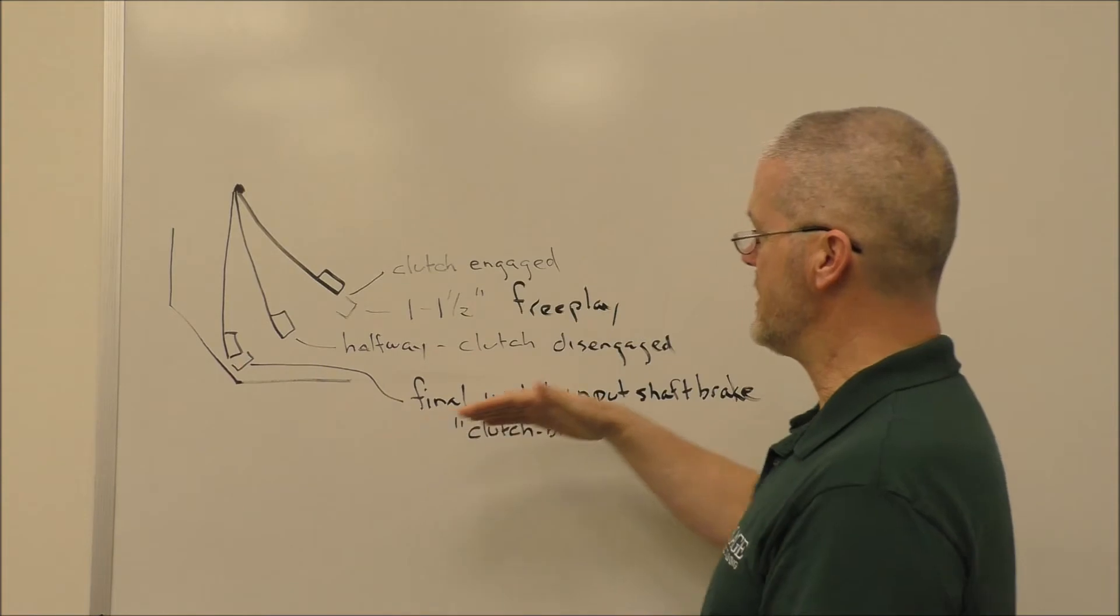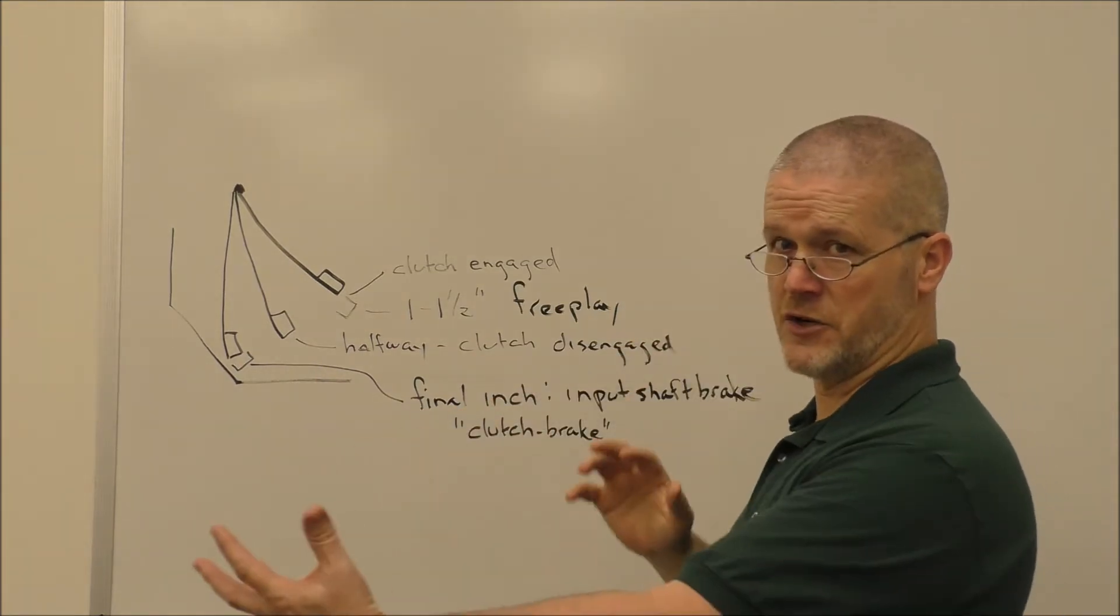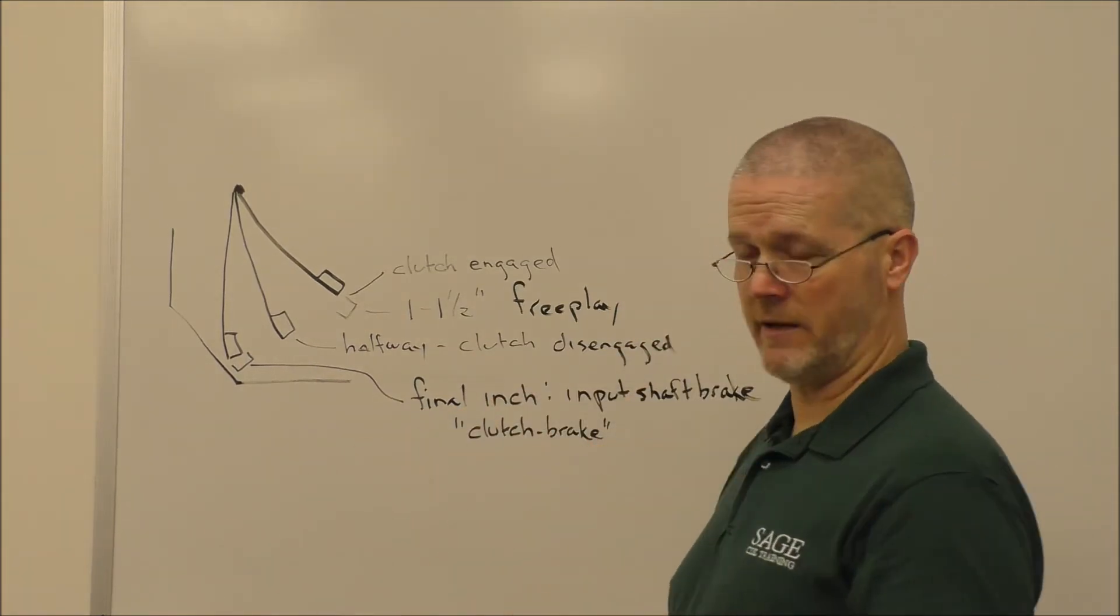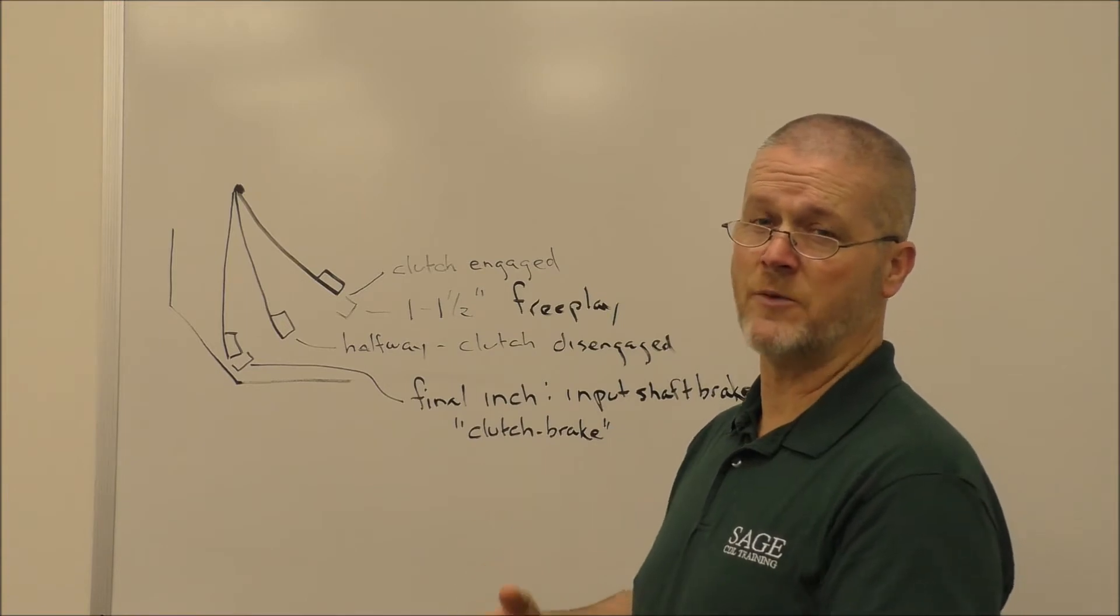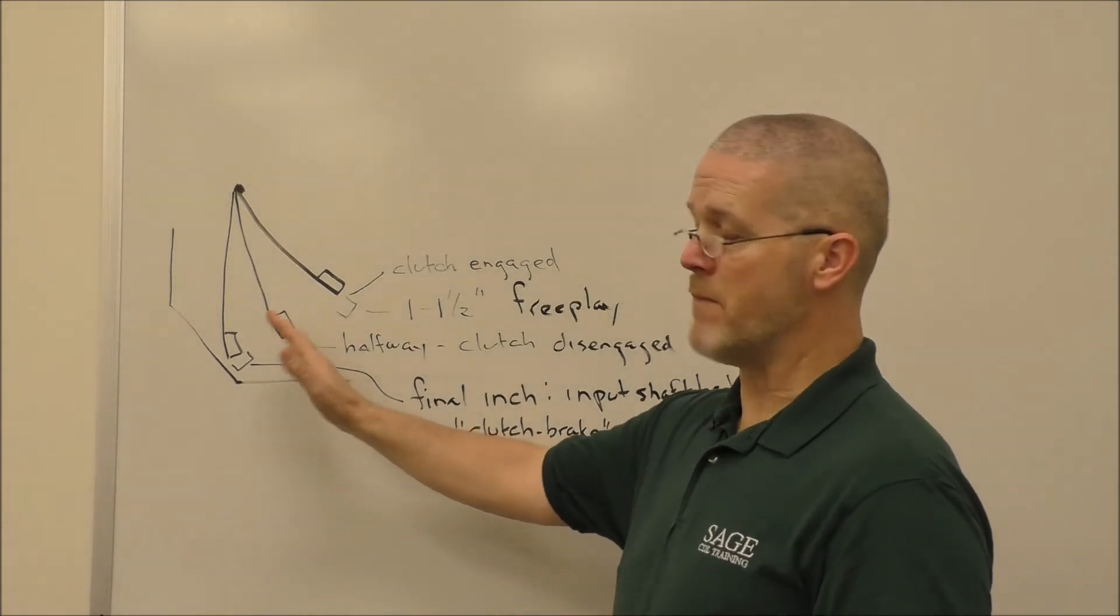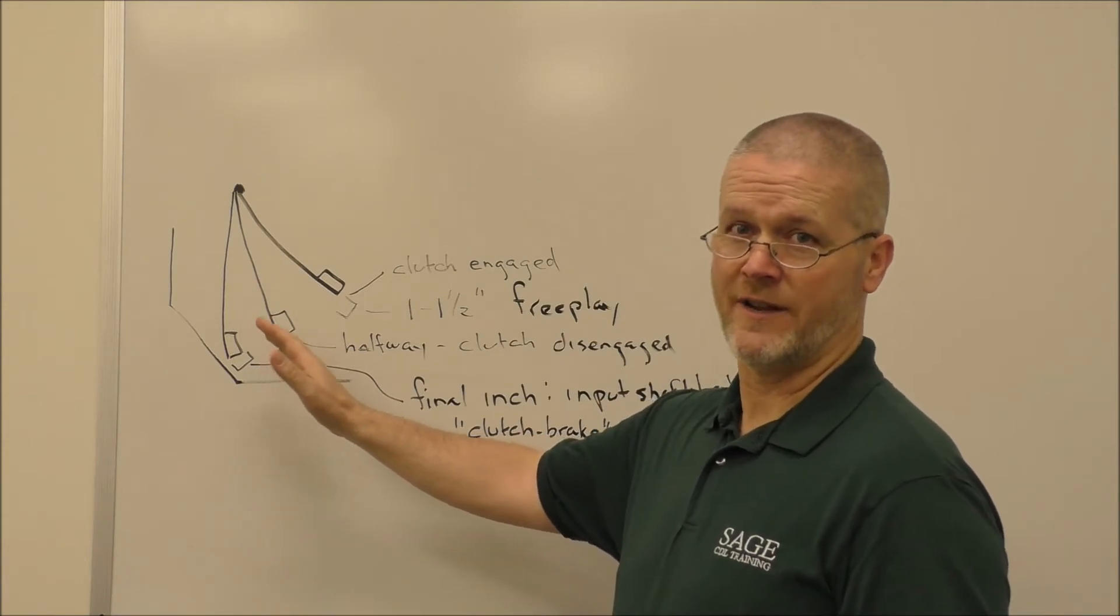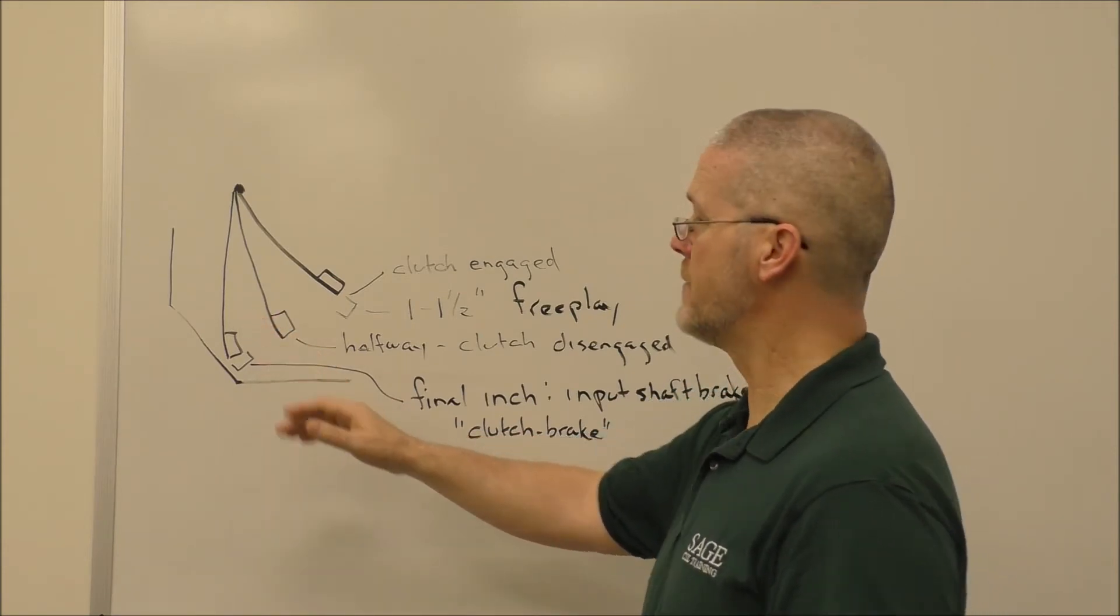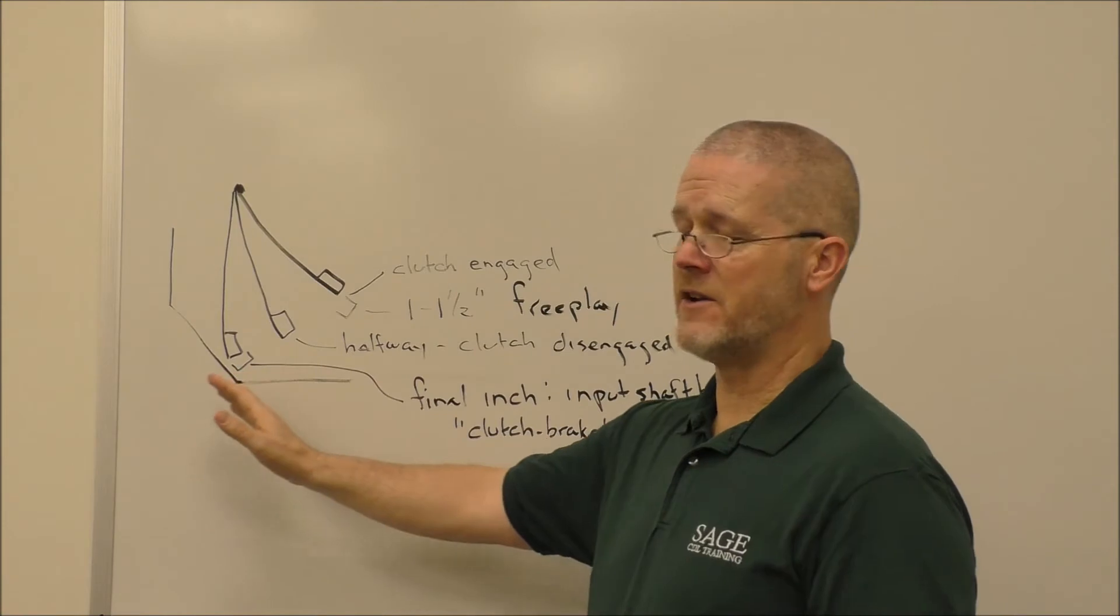the clutch is now disengaged. Your engine and your transmission are disconnected. We can stop at a stop sign or a red light, we can change a gear, whatever it is that we need to do. This is where most of what we do with the clutch happens: the halfway point. When you continue on down to the floor,